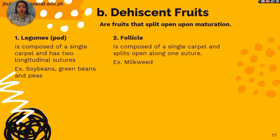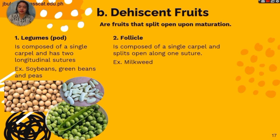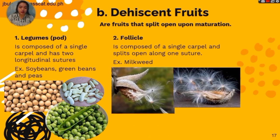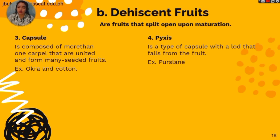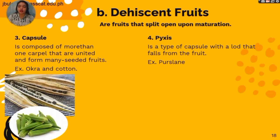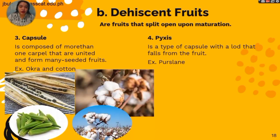Now let's go to dehiscent fruits, which are fruits that split open upon maturation. First, we have legume pods, composed of a single carpel with two longitudinal sutures. Examples are soybeans, green beans, and peas. Second is the follicle, composed of a single carpel that splits open along one suture. Examples are milkweed. Third is the capsule, composed of more than one carpel that are united and form many-seeded fruits. Examples are okra and cotton seeds. The fourth dehiscent fruit is the pyxis, which is a type of capsule with a lid that falls from the fruit. Examples are purslane.